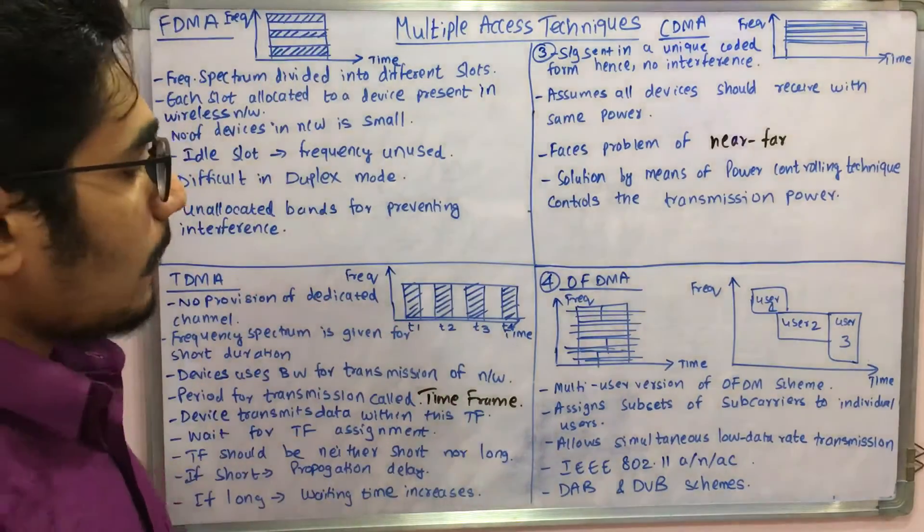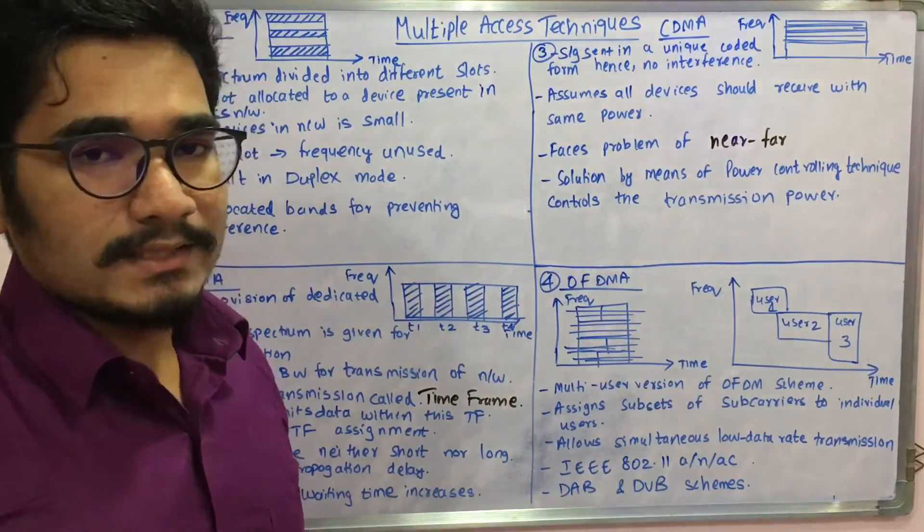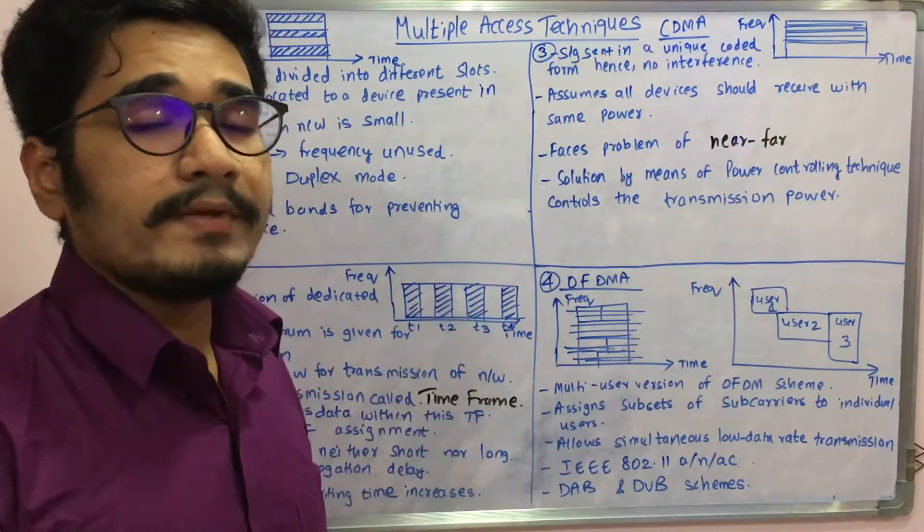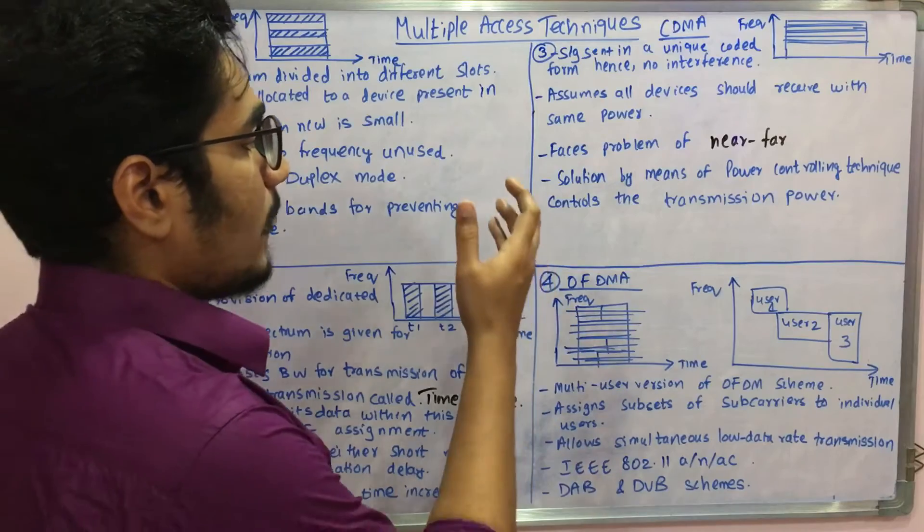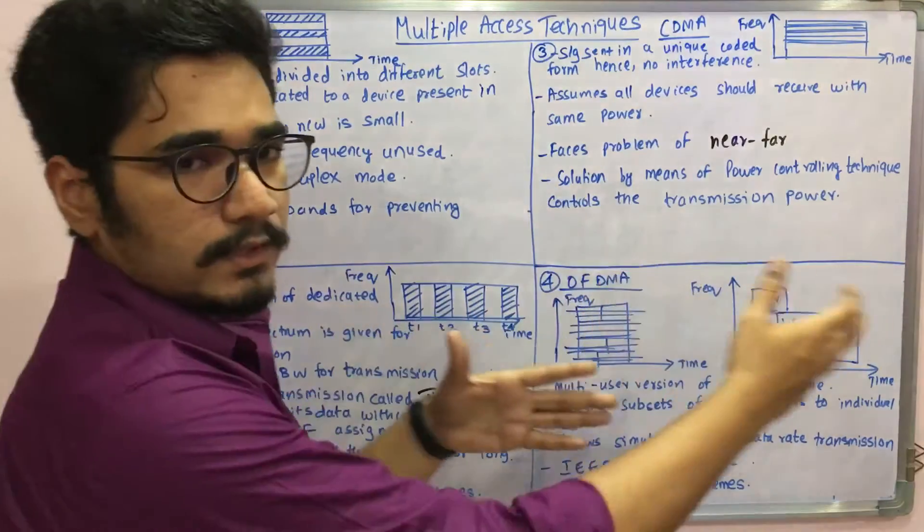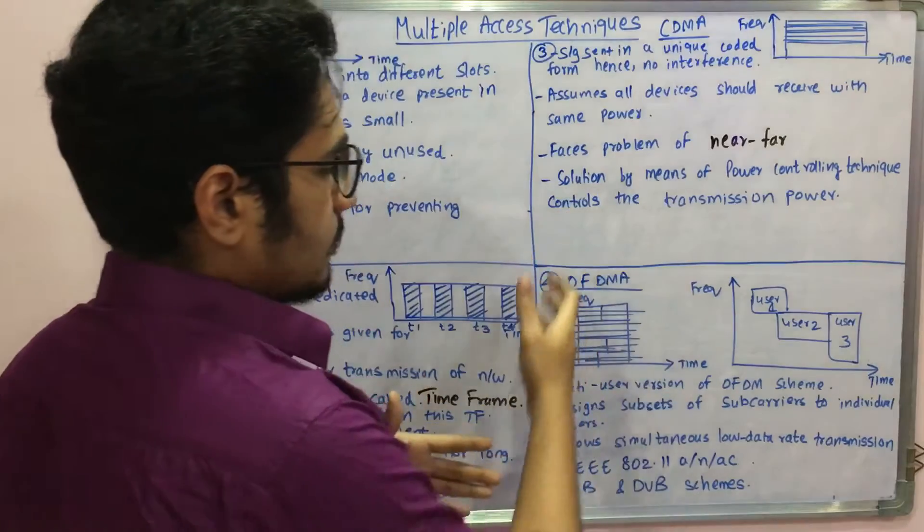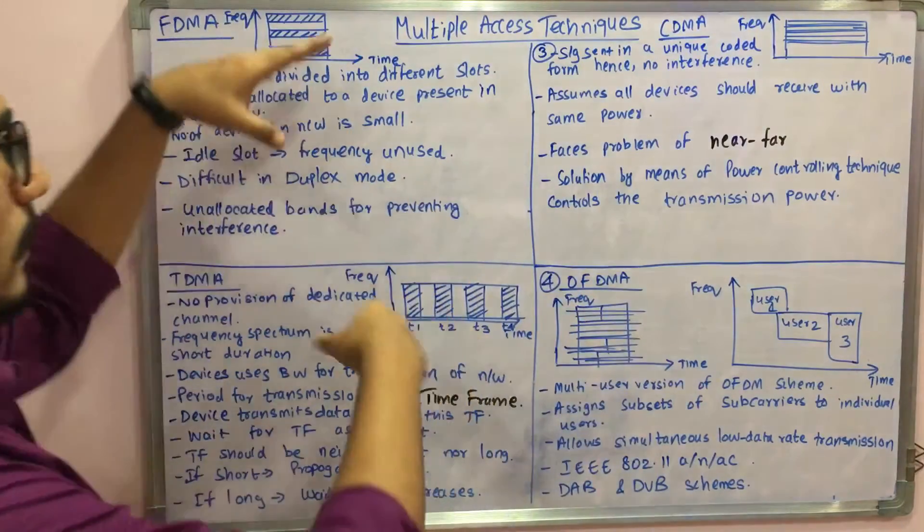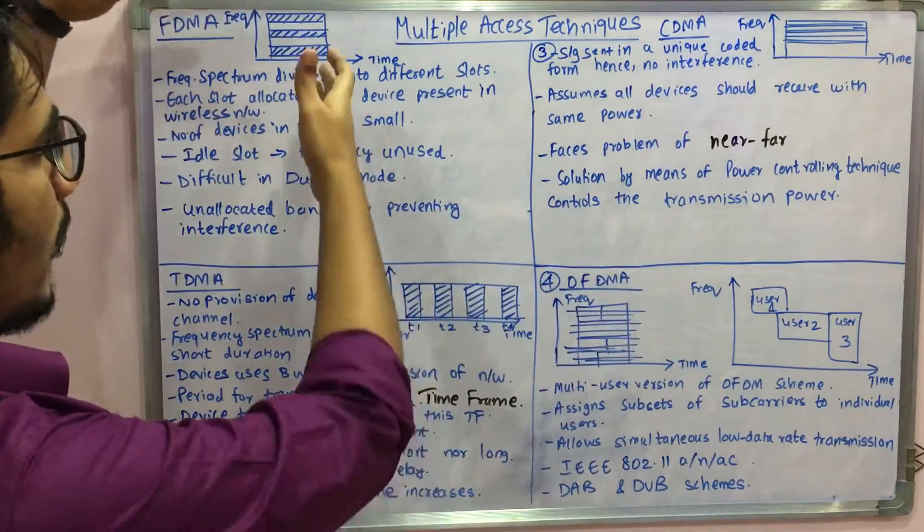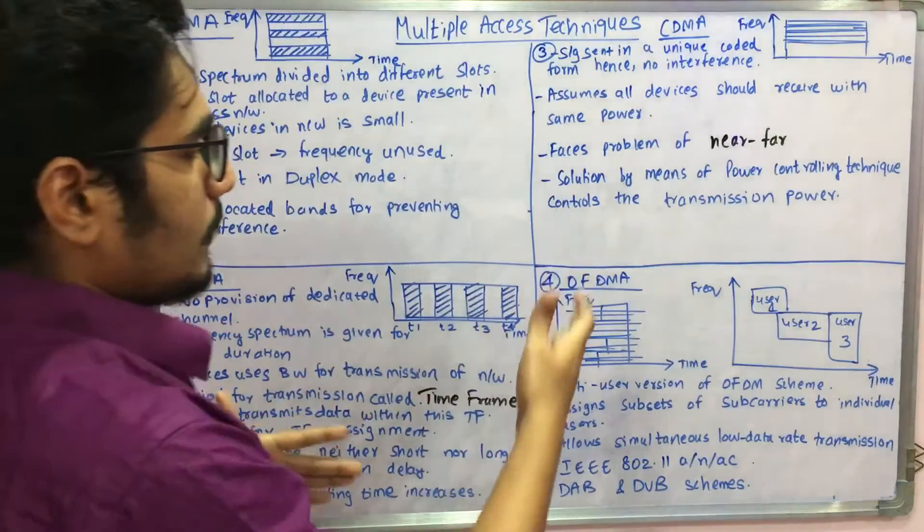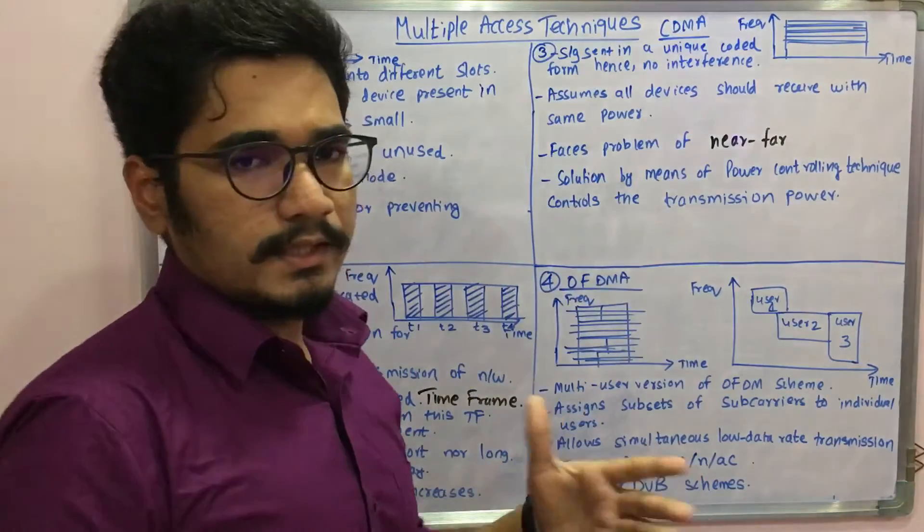Next, we're talking about the final multiple access technique: orthogonal frequency division multiple access, OFDMA. In this, we can see two different diagrams. This diagram is the simpler version. We have this frequency allocation.